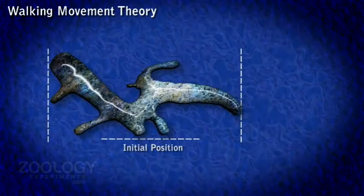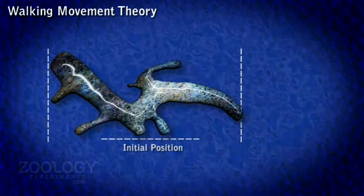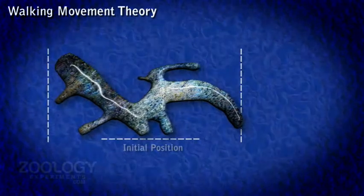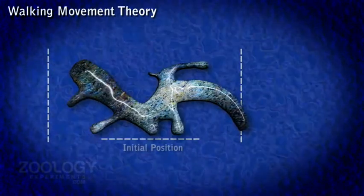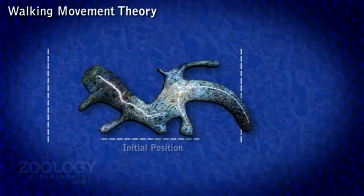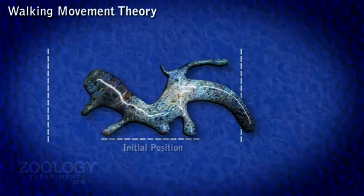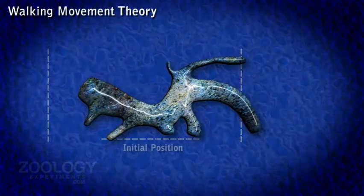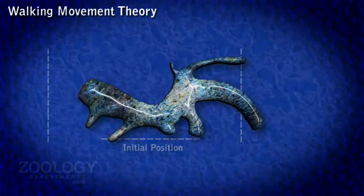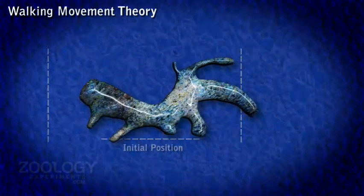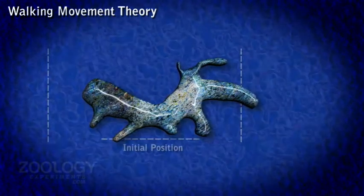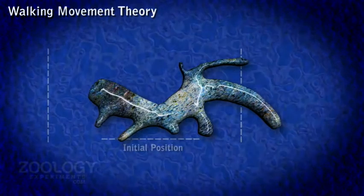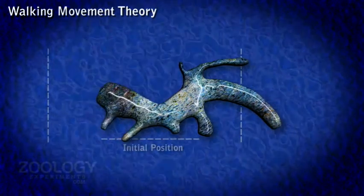In amoeba proteus, a contractile substance present in the cytoplasm is mainly responsible for the amoeboid movement. According to this theory, the extended pseudopodia becomes attached to the solid rock and then contracts to pull the body forward. Amoeba appears to walk on its leg-like pseudopodia.